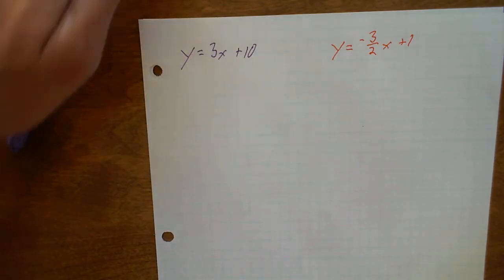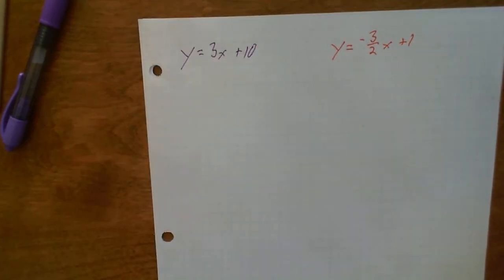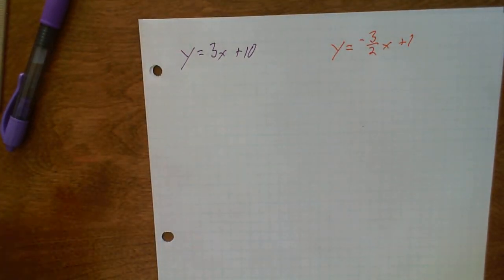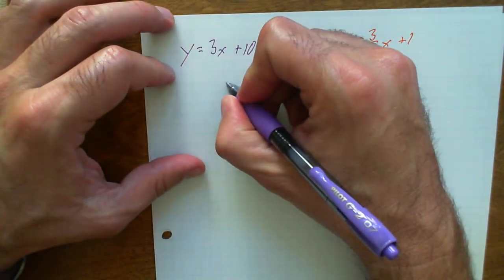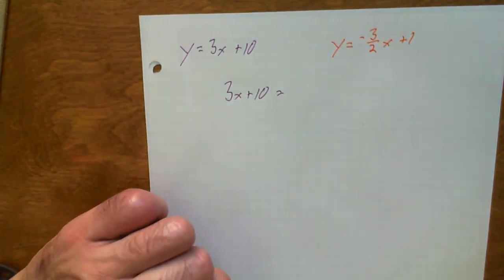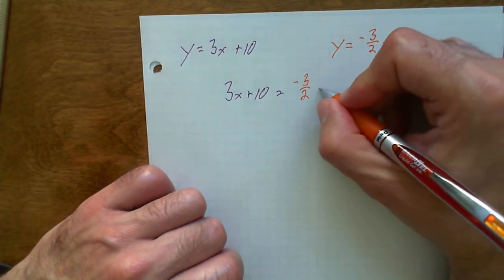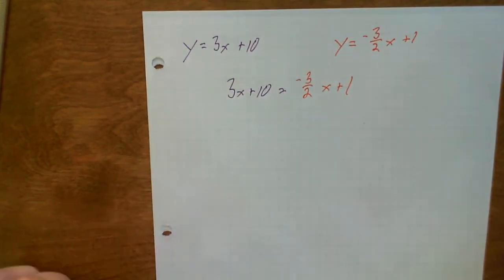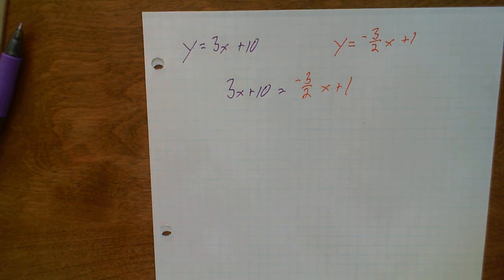Let's do one more problem. Here's our last one — go ahead and pause the video and try this one on your own, then see if you get the same solution as me. We have 3x plus 10 equals negative 3 over 2 x plus 1. Oh, we got a fraction here — that's okay, we're not afraid of fractions.